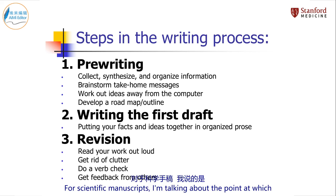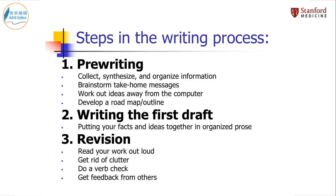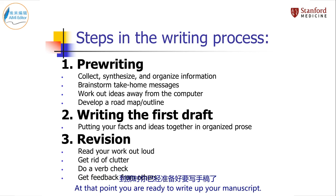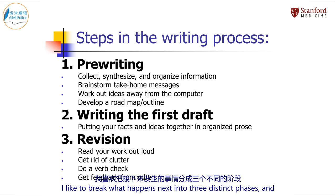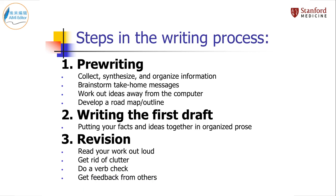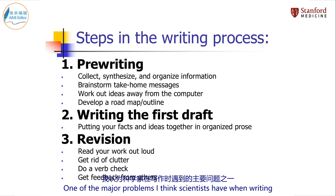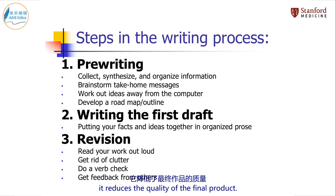For scientific manuscripts, I'm talking about the point at which you have done your experiments and you have your data and results in hand. At that point, you are ready to write up your manuscript. I like to break what happens next into three distinct phases, and I really do separate these three phases in my head. One of the major problems I think scientists have when writing is that they convolute these three steps, which makes the writing harder and less efficient, and reduces the quality of the final product.